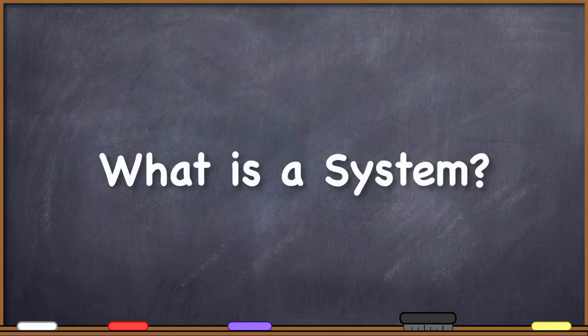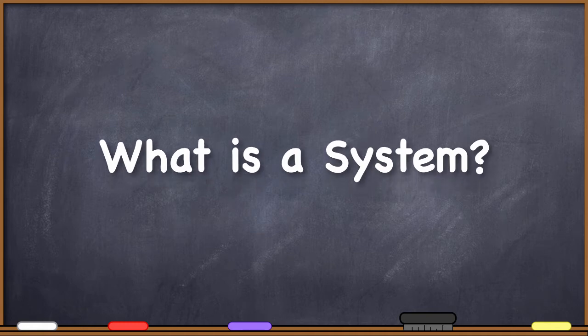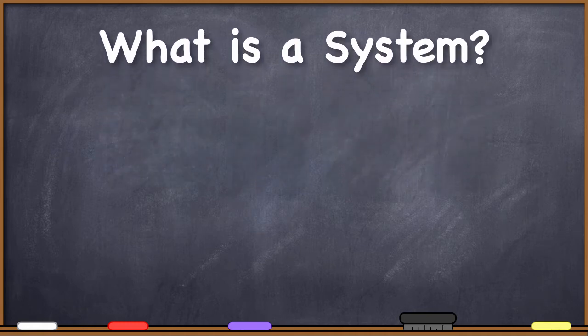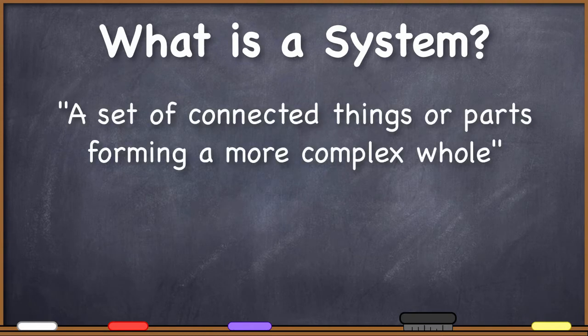So the first order of business in defining geographic information system is to define system. To do this, I just started with some basic dictionary definitions. In general, a system is a set of connected things or parts forming a more complex whole, and that definition does seem to make a lot of sense. When one thinks about the respiratory system, for example, one is thinking about a set of organs that are all connected so that they form a more complex whole.